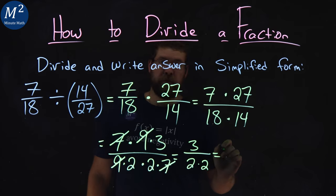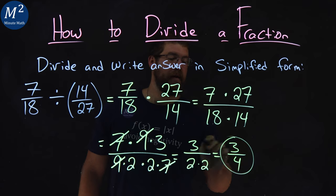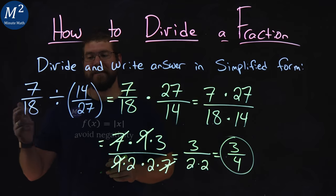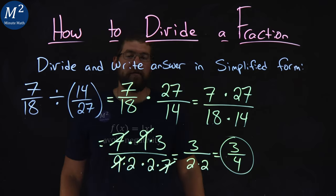So let's simplify now. 3 in the numerator, 2 times 2 is 4 in the denominator, and after all of that, 7 over 18 divided by 14 over 27 comes out to be a 3 fourths.